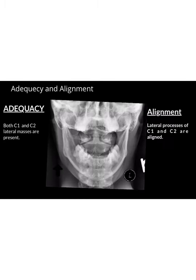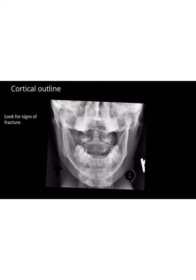Adequacy, alignment, and cortical outline are the most important aspects of the odontoid view x-ray. Adequacy dictates that both C1 and C2 lateral masses are present — here are the C1 and C2 lateral masses. Alignment dictates that the lateral processes of both C1 and C2 are aligned on both sides, and we can see they are perfectly aligned here. For cortical outline, we look for any fractures, which is not the case in this example.